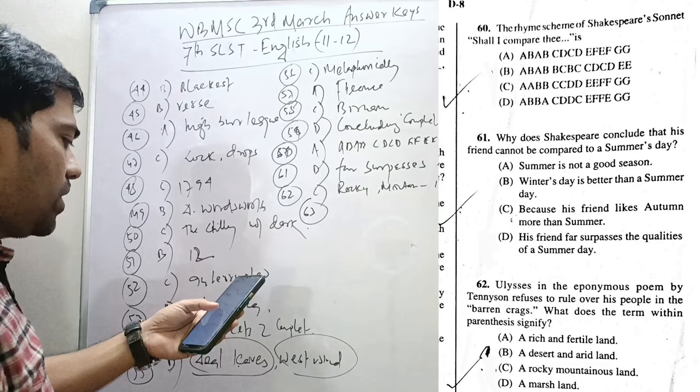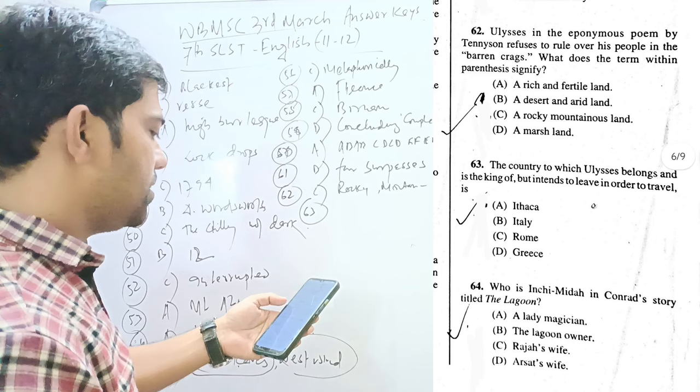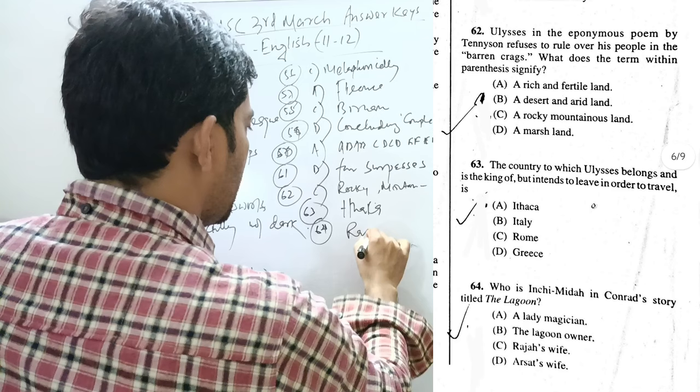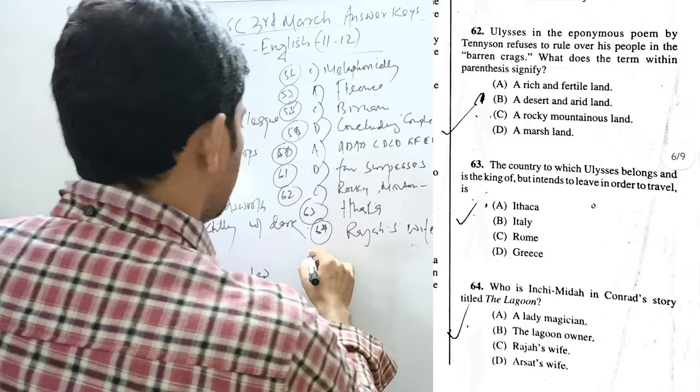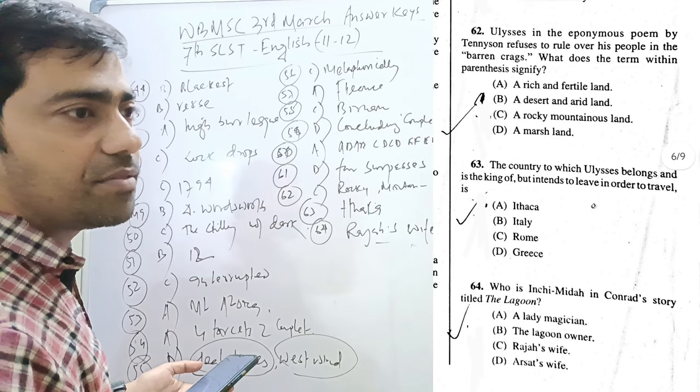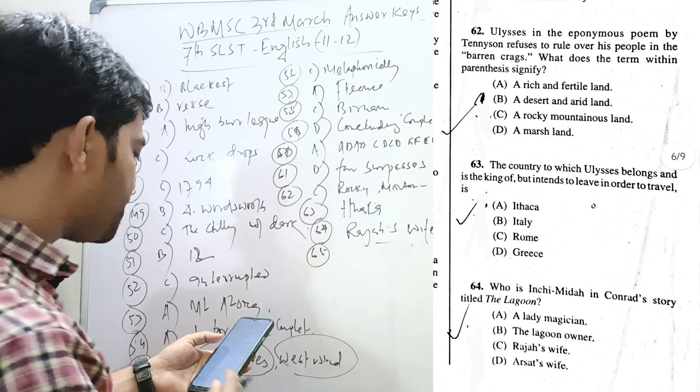Question 63. The country in which Ulysses belongs and is the king but intends to leave in order to travel is Ithaca. Who is the Inchimida in Kanthapura's story? Inchimida is Raja's wife. Though it is shrouded in the text, but we can speculate through the text that Inchimida is the wife of the Raja and Raja himself was very much afraid of her. She was a very cunning lady.